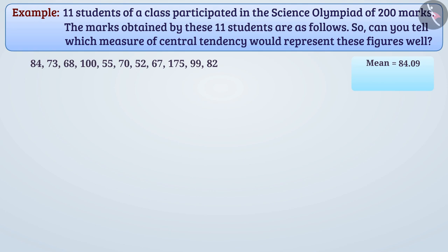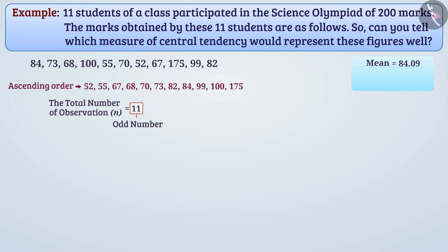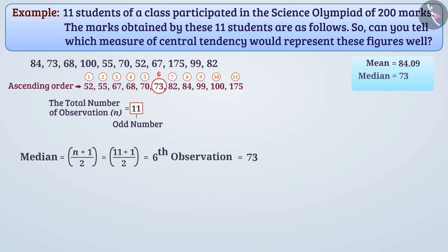Now to find the median, we will arrange the data in ascending order in this way. The total number of observations here is 11, that is an odd number. Therefore, median is the sixth observation, which is 73.